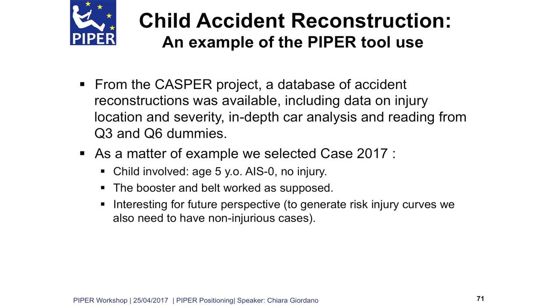Case 2017 involves a child of five years old, and it is a non-injurious case. Basically, the child was sitting on a low-back booster, it was belted, and the belt worked as designed — so it worked properly and the child was not injured. We still think that this case is interesting for future perspectives, especially when thinking about generational risk injury curves, where we also need reconstructions with non-injurious cases.